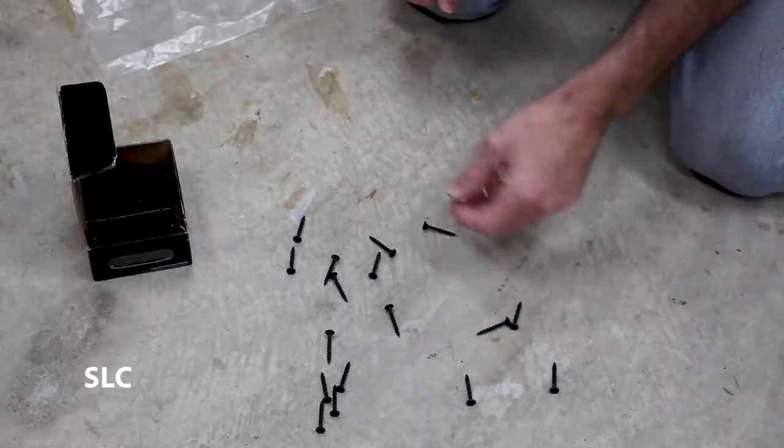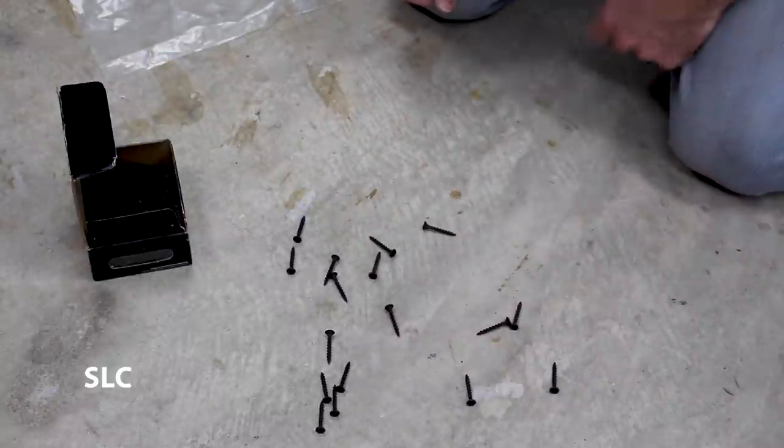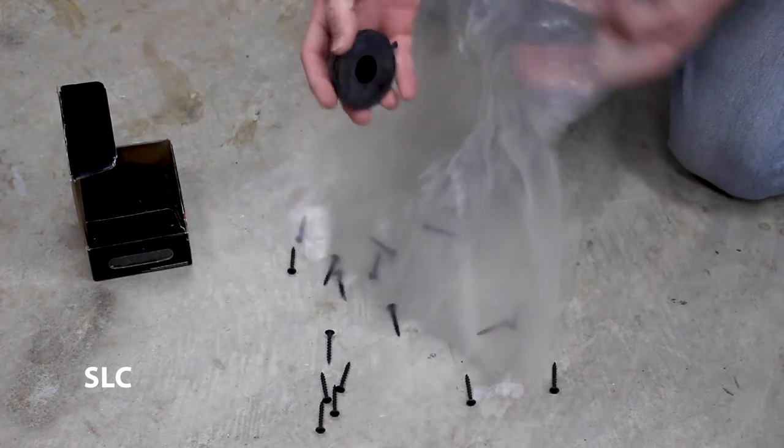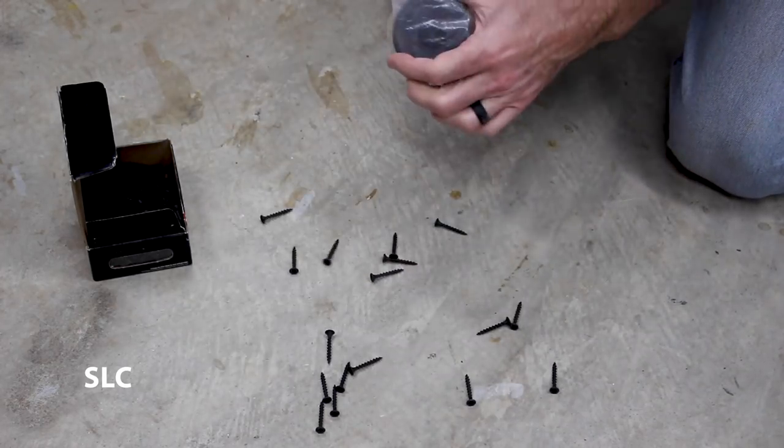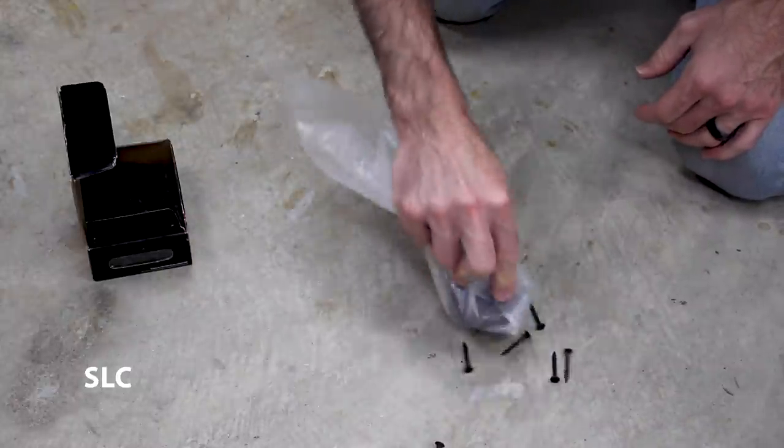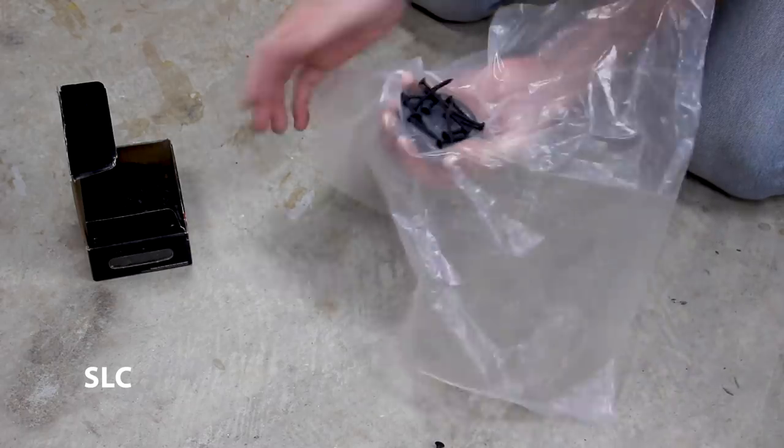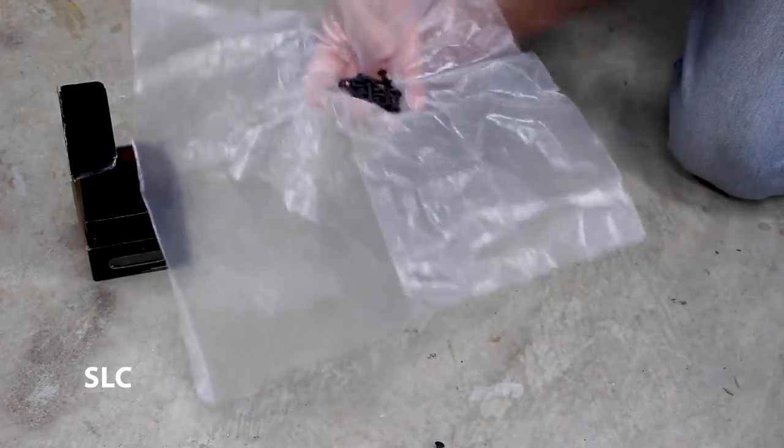Now if you happen to spill a bunch of your screws, you can go around and pick each one up individually or you can get a heavy duty magnet, then take a piece of plastic, wrap it around the magnet and you can quickly gather up your screws. And then to empty this, all you gotta do is just pull the plastic back off and all the screws come with you.